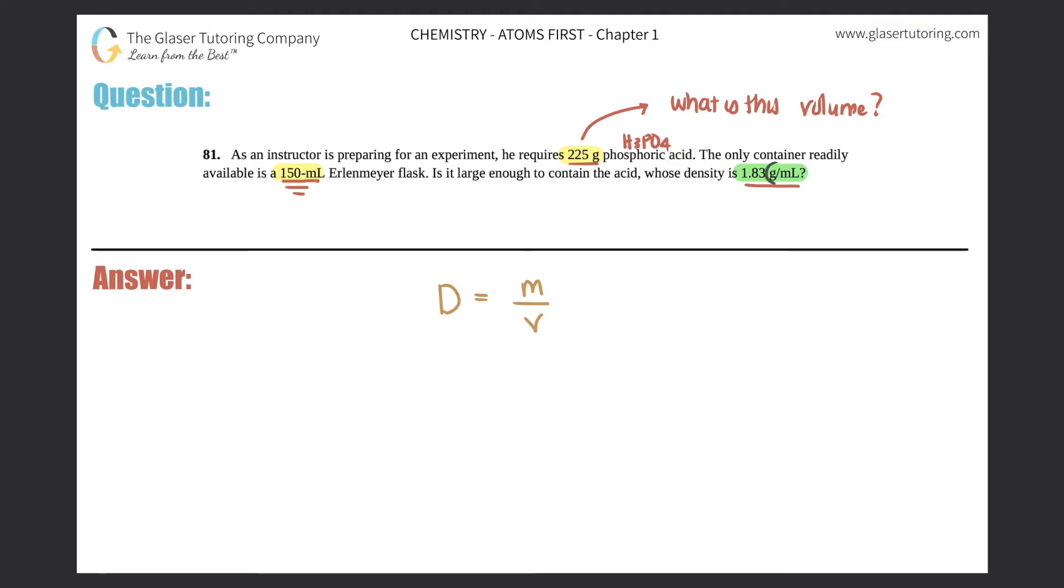So you just got to be very careful with the units they give you. This density is grams per mil, so that means the mass has to be grams. They have to match. Grams and grams have to match. And this volume needs to be in milliliters because these have to match as well.